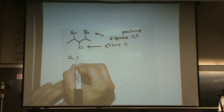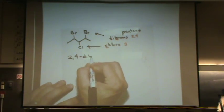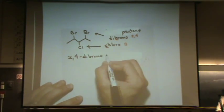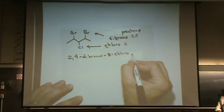So, this would be called two, four, dibromo, three, chloro, pentane.